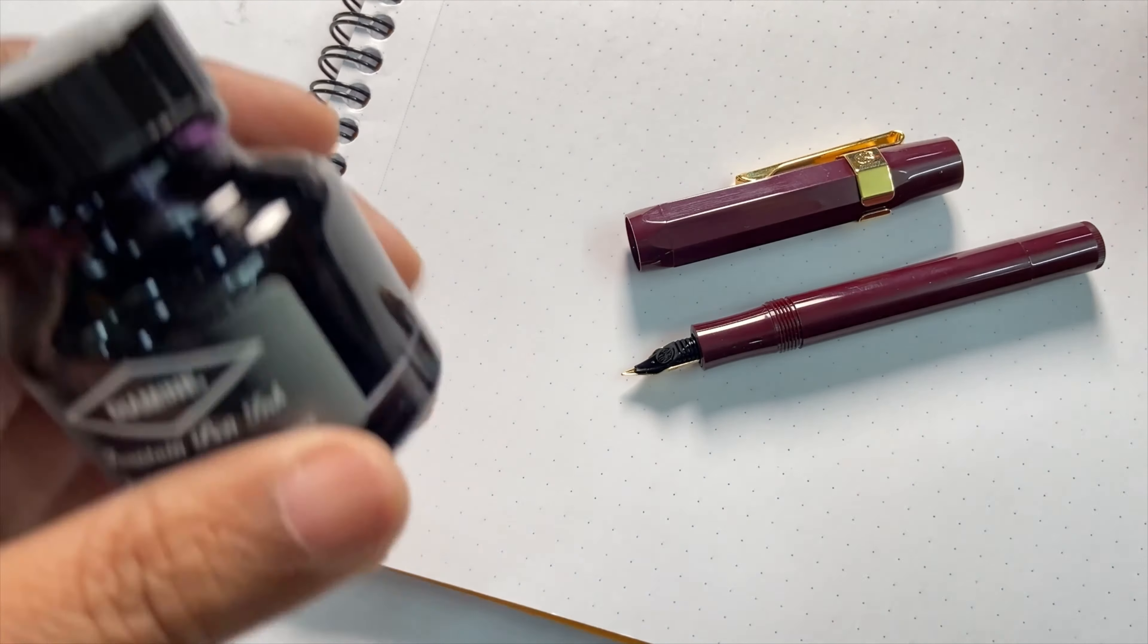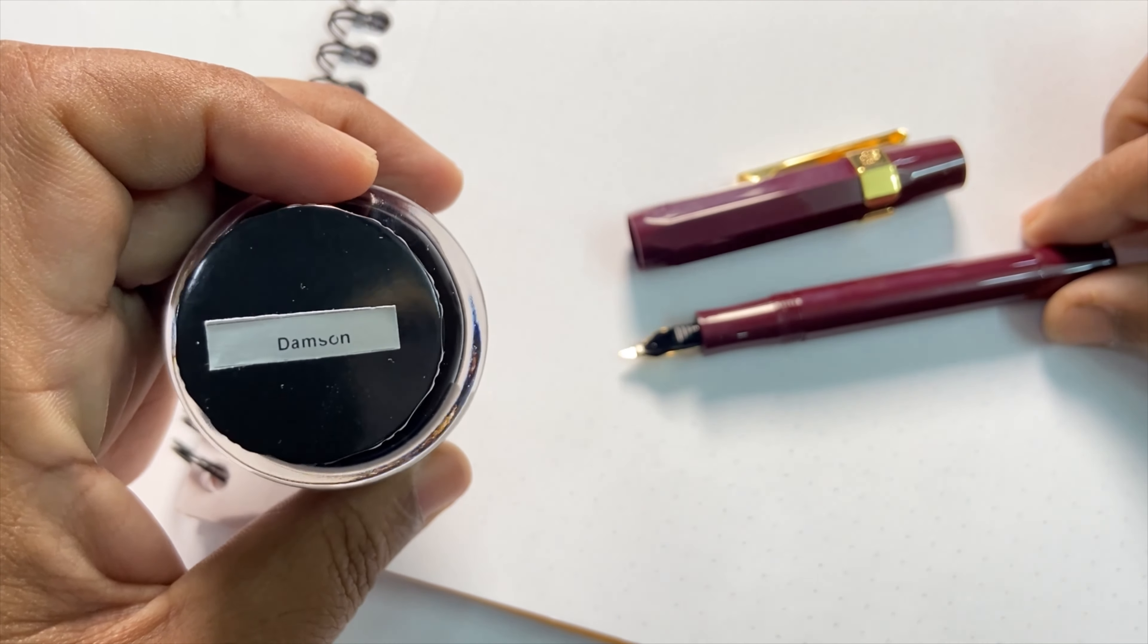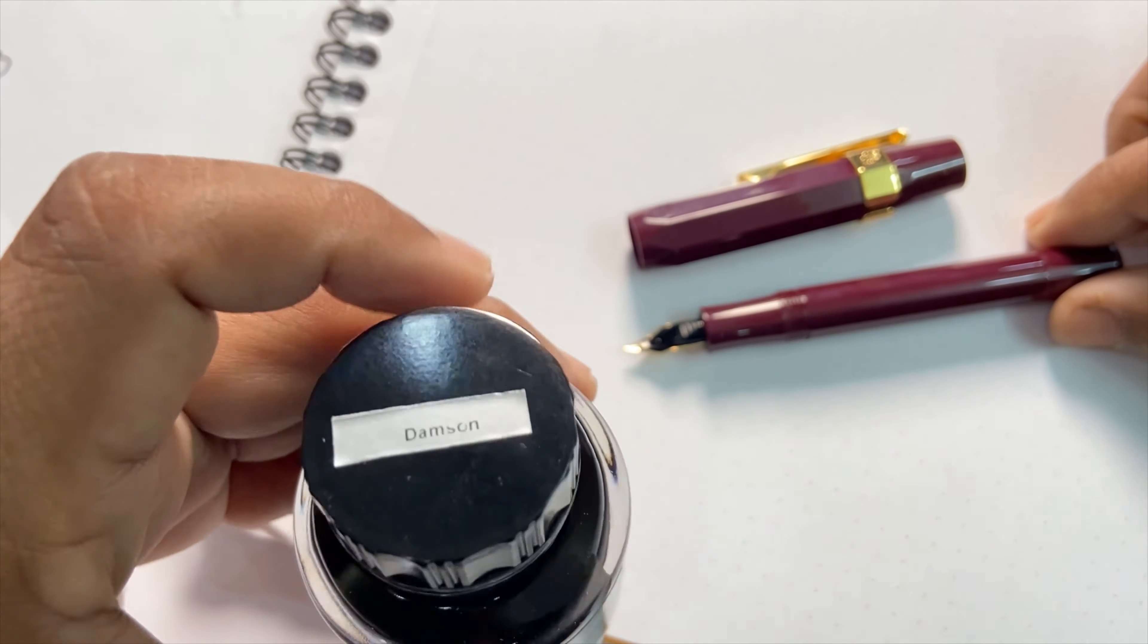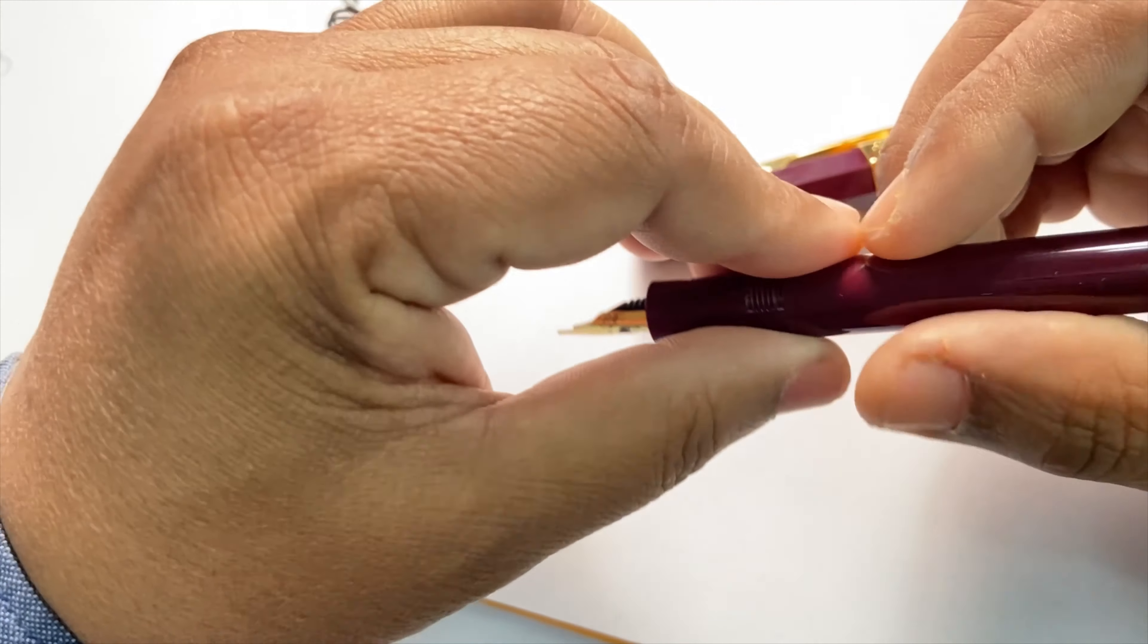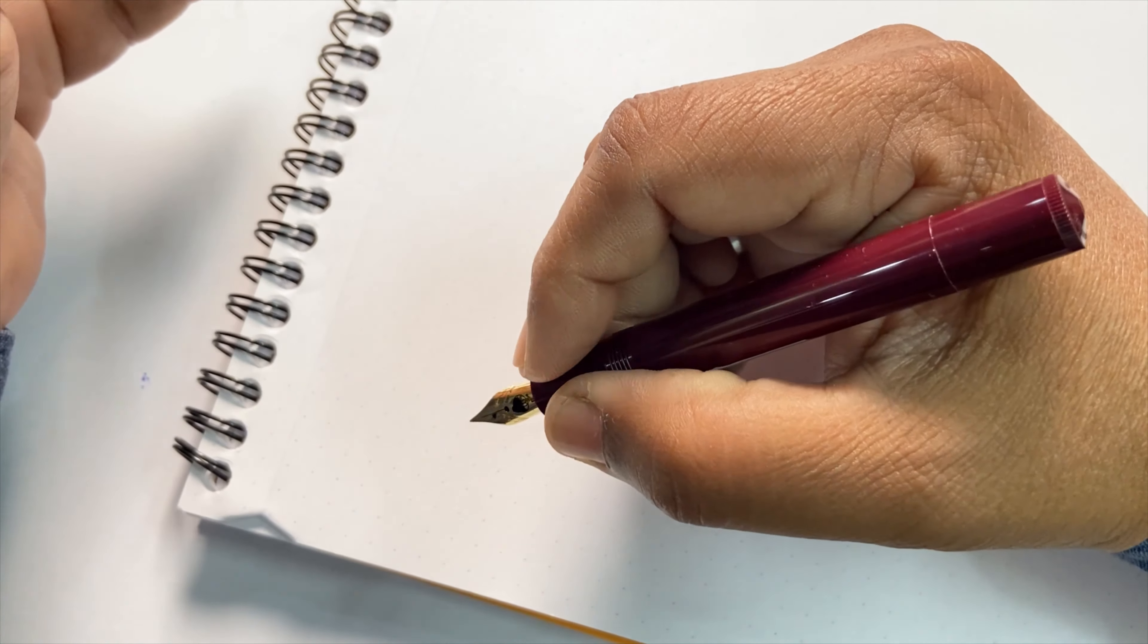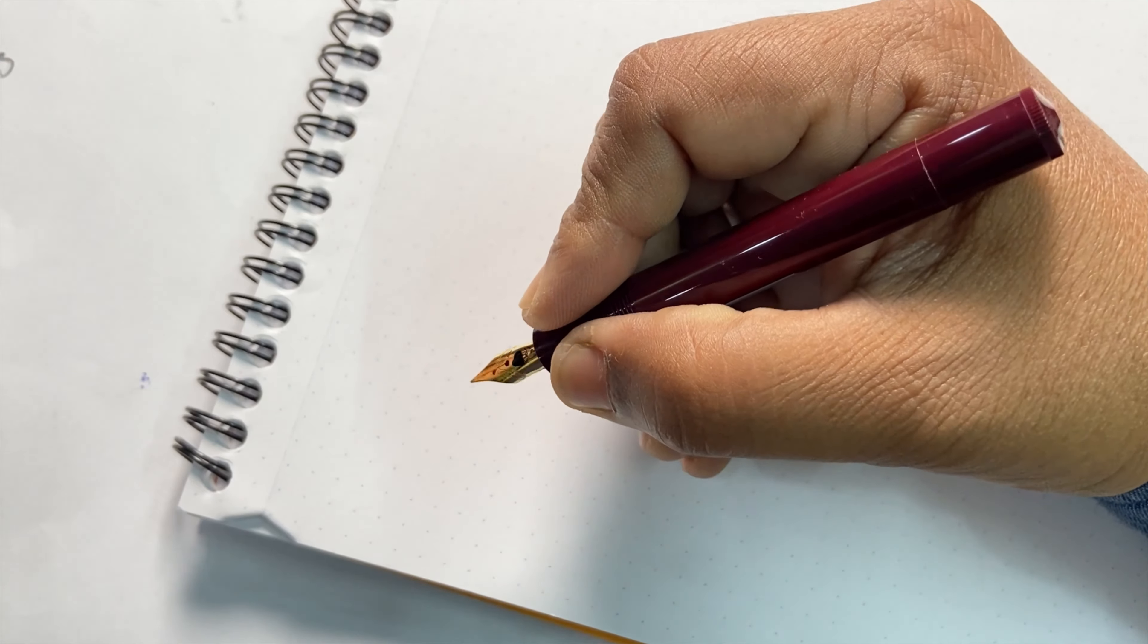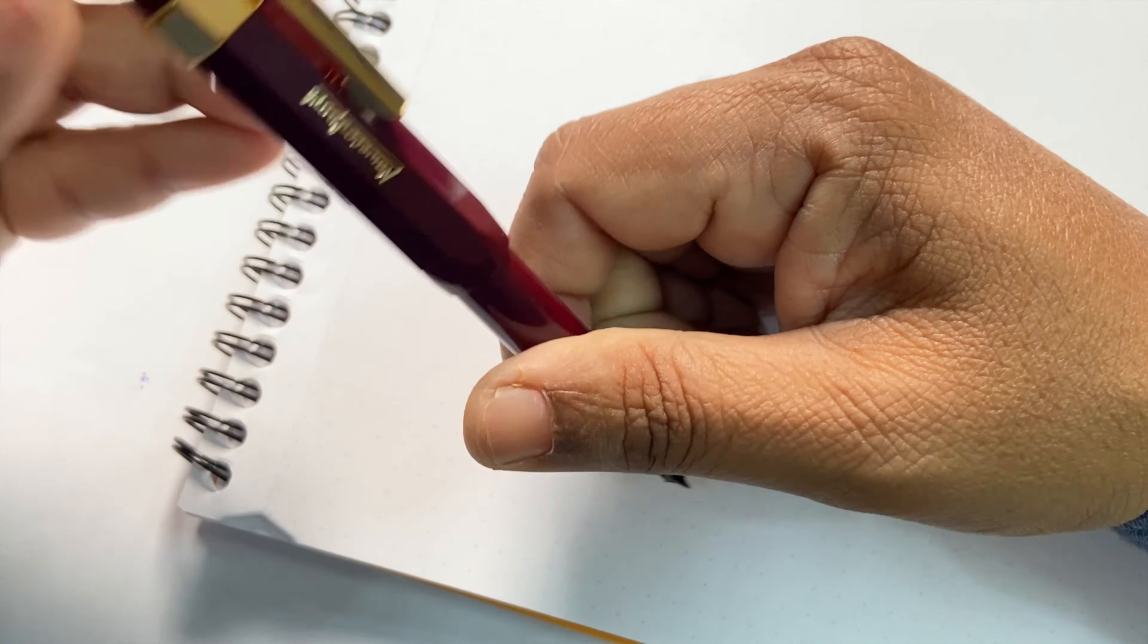Friends, I have inked up this pen with Diamine Damson, which is a variation of a darkish purple, I would call it, and I will test it on 100 GSM paper to see how the pen performs. As you can see, I have a medium-sized hand. The pen just fits this section, and I can write Kaweco Sport without posting.